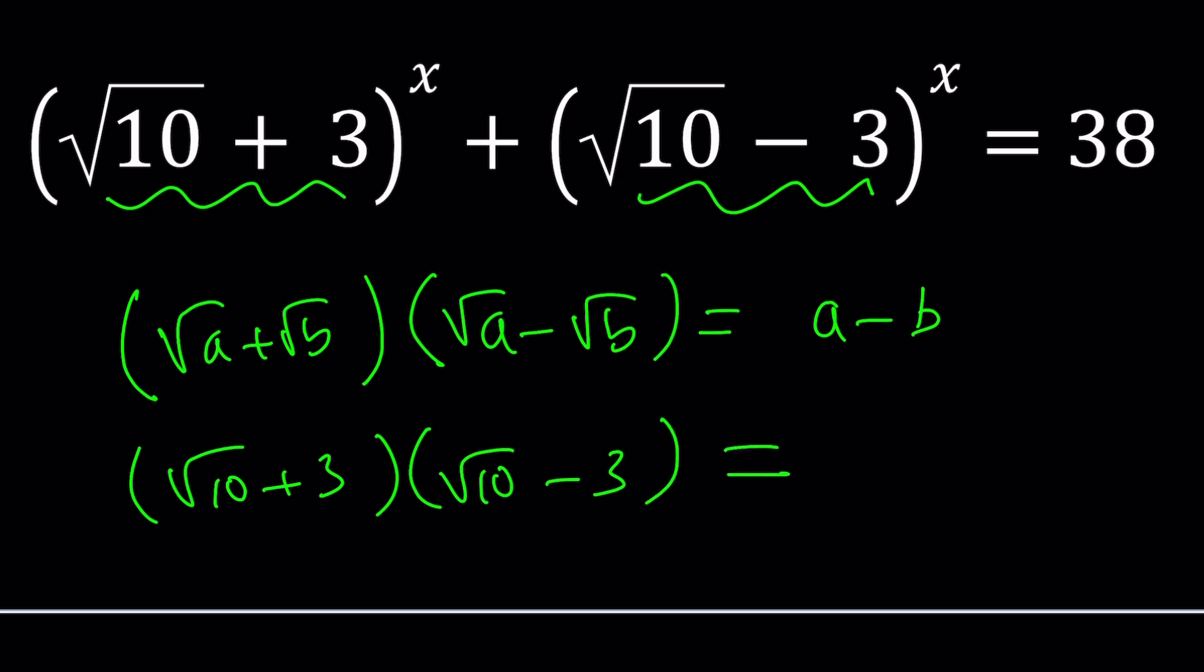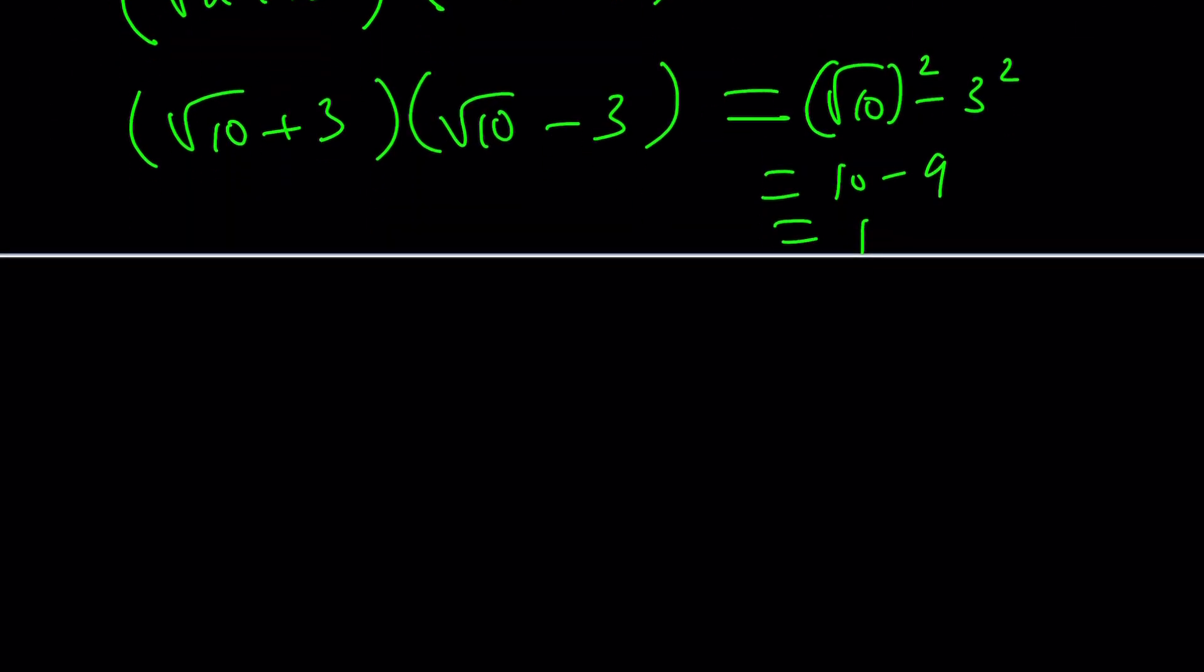And with this one, when you multiply these two things, not only you get a rational or real number, but you also get something super nice. What is square root of 10 squared and 3 squared? It's 10 minus 9, which is 1. Great, you know what that means? It means these are not just conjugates, but they are also reciprocals. Isn't that nice?